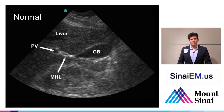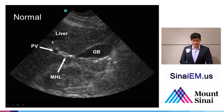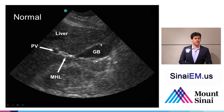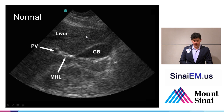Here's a pretty normal view of the liver in what's often referred to as the exclamation point sign, where the point of the exclamation point is the portal vein, the middle hepatic ligament connecting the two structures, and then the gallbladder forming the top part of the exclamation point. We can see the anterior and posterior walls of the gallbladder demonstrated pretty well. Note how crisp and sharp the anterior wall looks — that's where we'll look for gallbladder wall thickening later on.